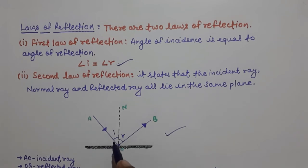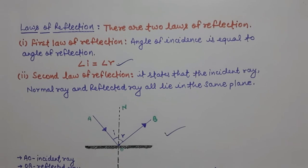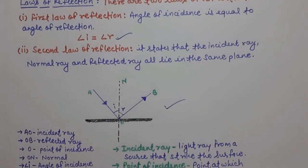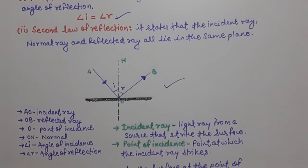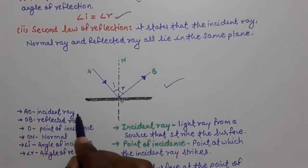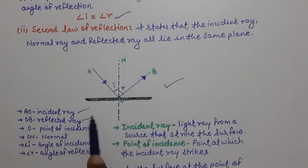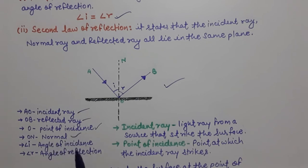In this diagram, I have marked angle I as the angle of incidence and angle R as the angle of reflection. AO is the incident ray, OB is the reflected ray, O is the point of incidence, and ON (the dotted line) shows the normal.